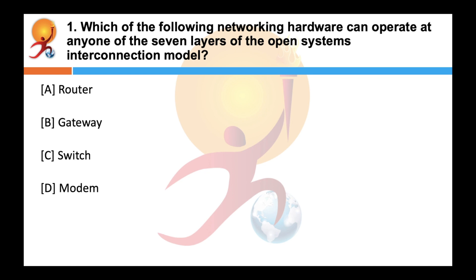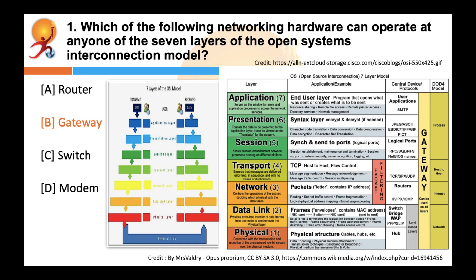Which of the following networking hardware can operate at any one of the 7 layers of the open systems interconnection model? Correct answer is B, Gateway.